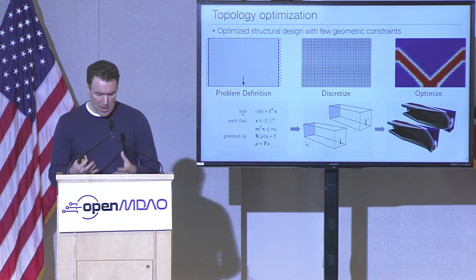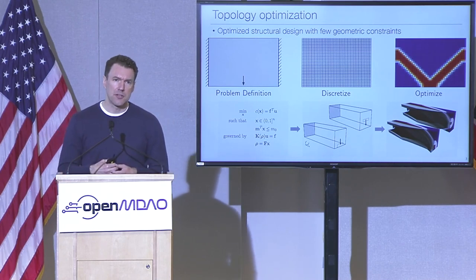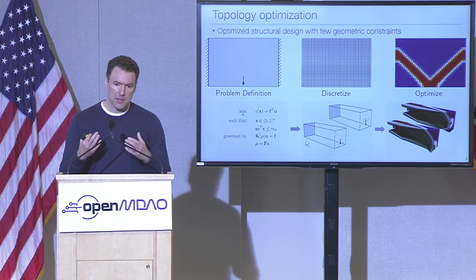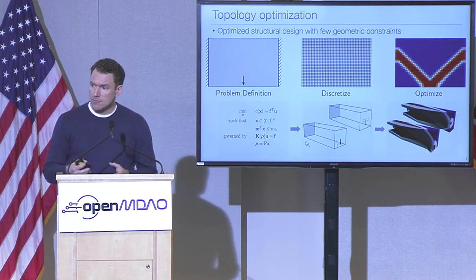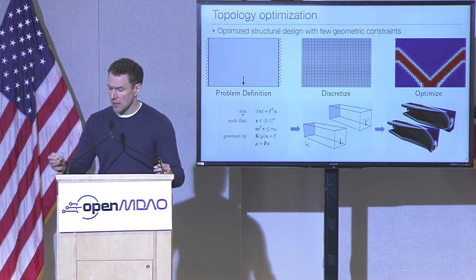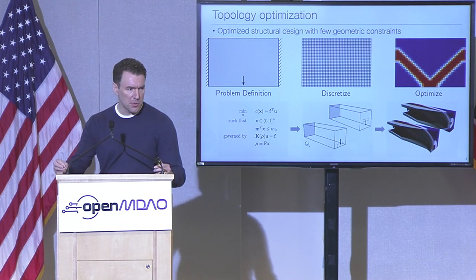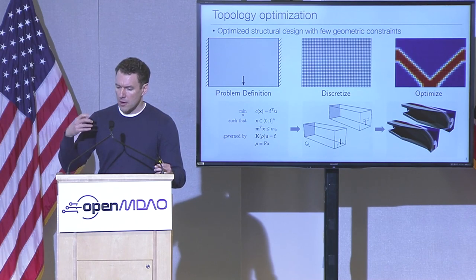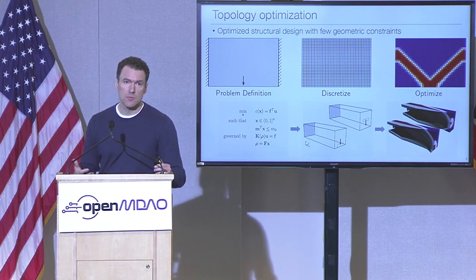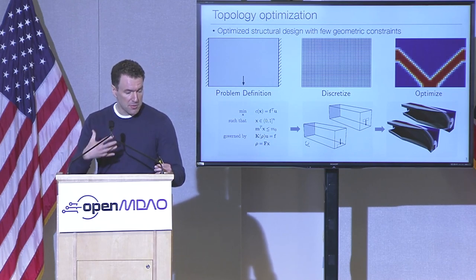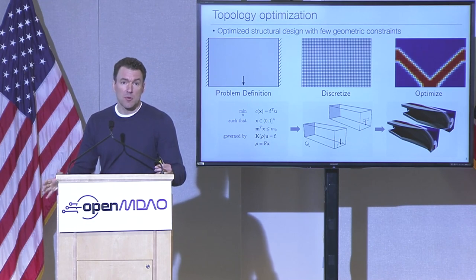The way topology optimization works is we start with a problem definition consisting of a domain where there may or may not be structure — there's an option to put structure anywhere within this domain and it can take any shape. This problem definition also contains boundary conditions and loads applied to the hypothetical structure, and an optimization problem definition — often minimizing deflection subject to a mass constraint. We discretize using a finite element mesh, and to each element we assign a continuous density variable between zero and one: one indicating material is present, zero indicating the absence of material.